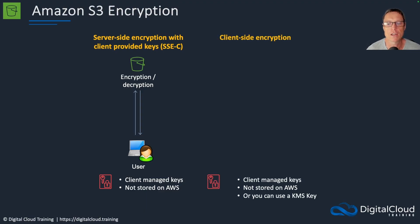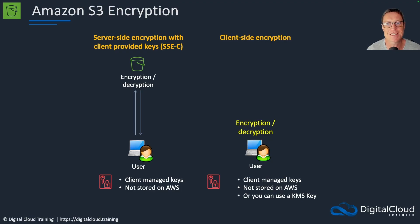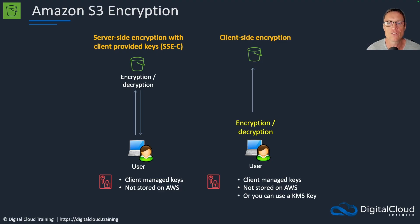The last option is client-side encryption, which is a little bit different. Here we still have client-managed keys, also not stored on AWS. You can use a KMS key for this as well. The key difference is that encryption and decryption takes place on the client side — for example, in an application. A user might connect to an on-premises application which performs the encryption using your own certificate infrastructure and then uploads the encrypted object to the bucket.